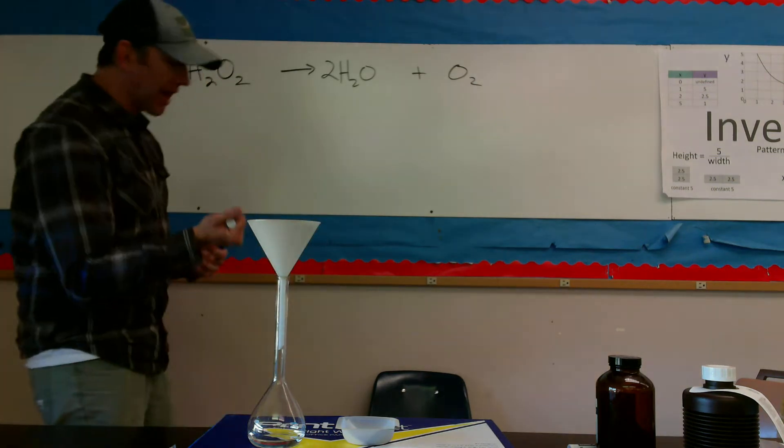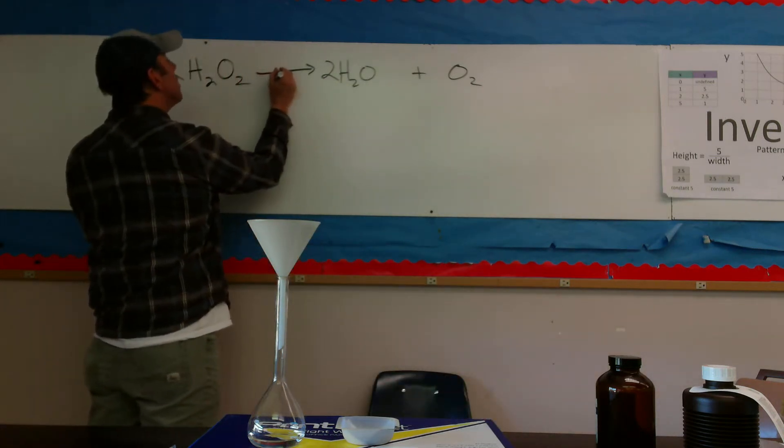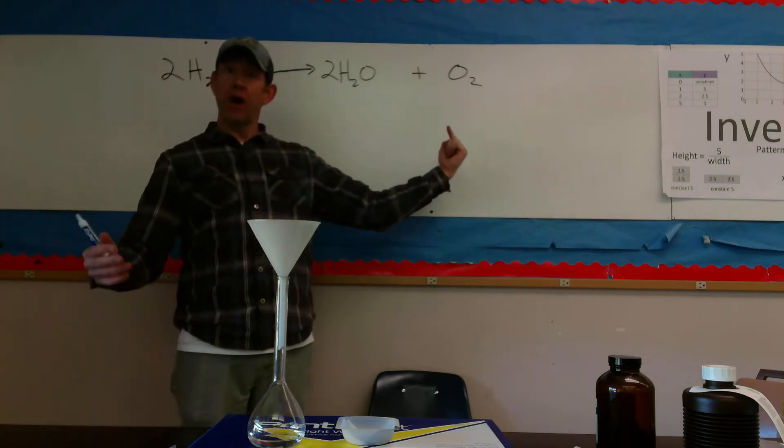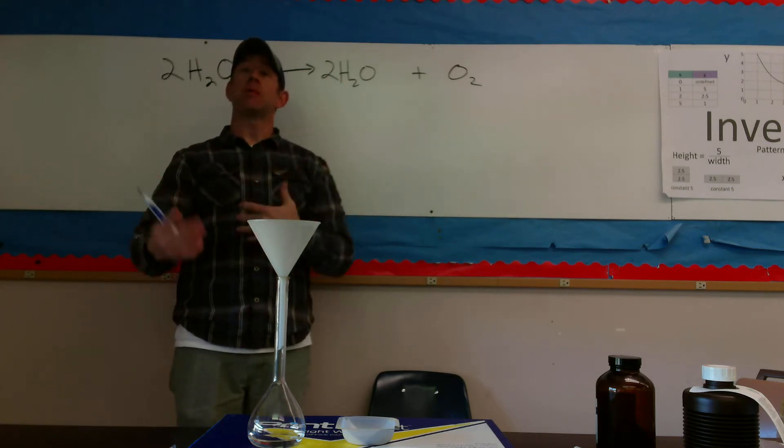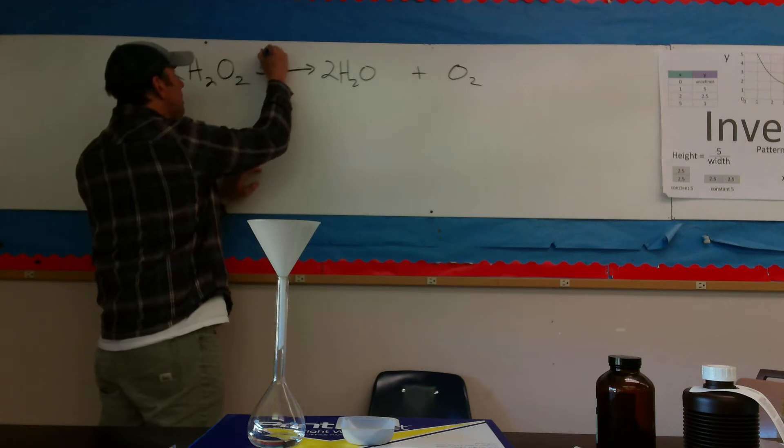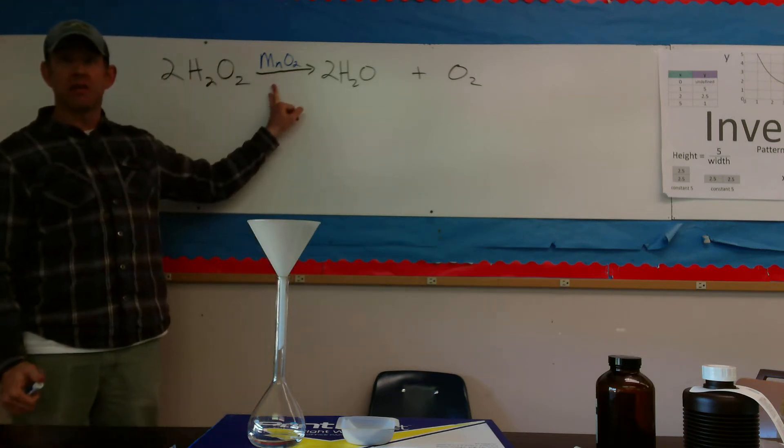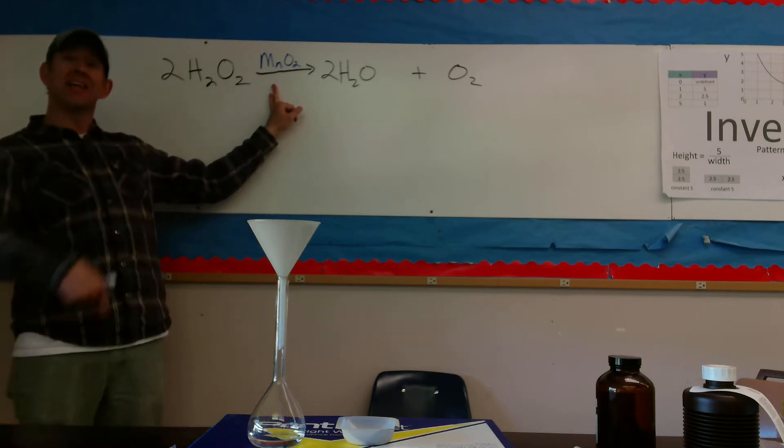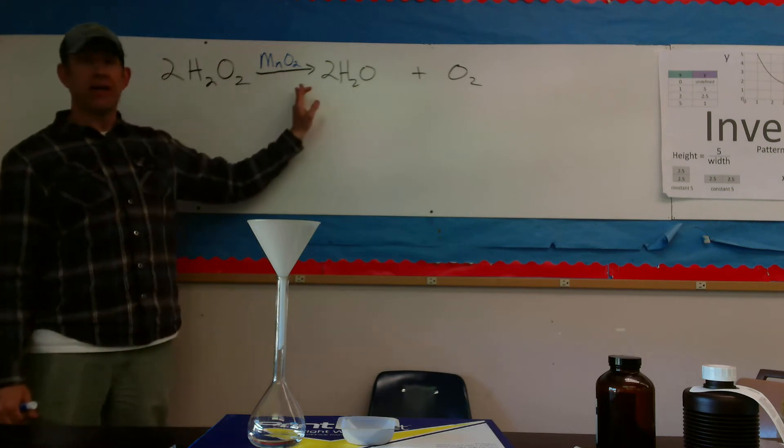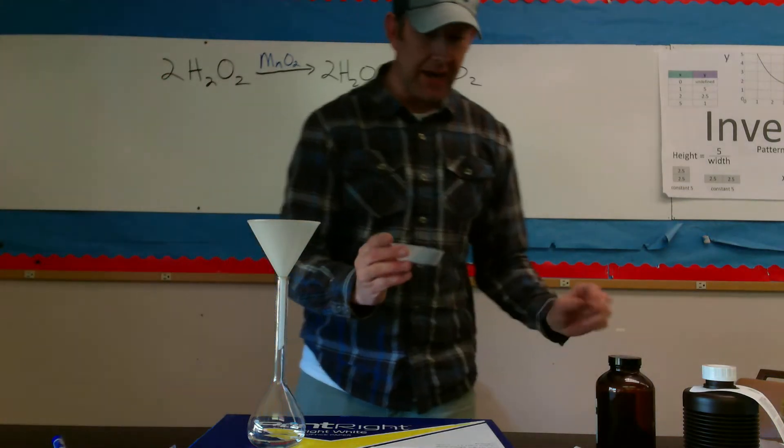What we can do to speed this reaction along is add what's called a catalyst. A catalyst is an additive we put in the reaction. It is not a reactant nor is it one of our products. It's just present in that reaction as a means to make that reaction occur more quickly or more completely. We're going to add some manganese dioxide, MnO2. I'm writing that on top of the arrow to indicate that this is not a reactant or product, it is a catalyst. It's not going to be exchanging electrons or recombining with any of the materials here. It's just helping that reaction to occur.